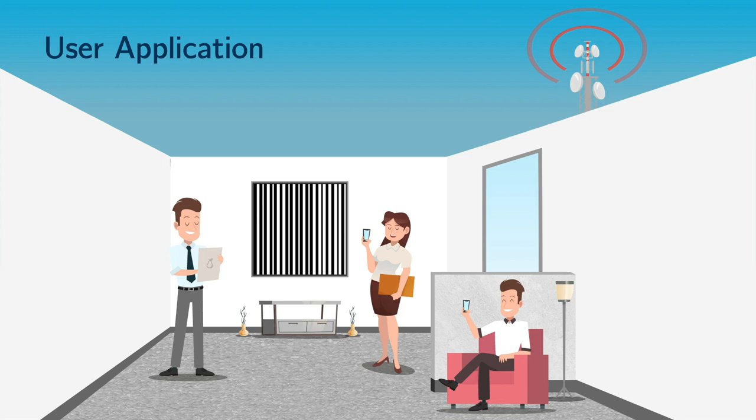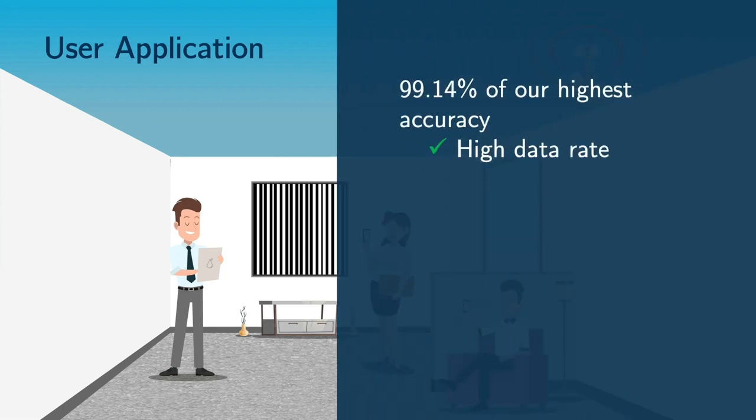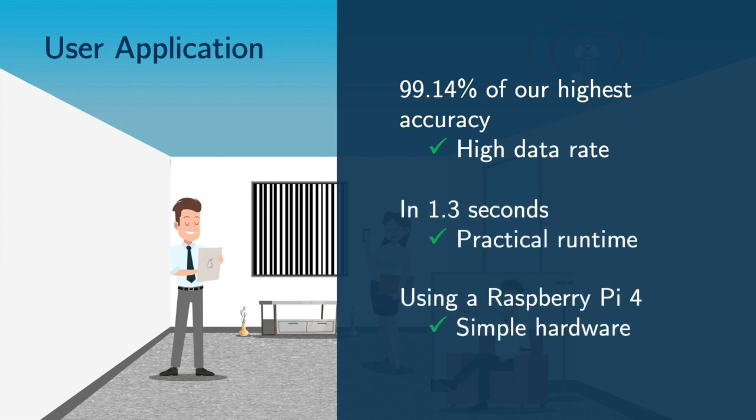Considering data rate, the first implementation achieves 99% of the maximum data rate we achieved. Therefore, the proposed solution achieves a high data rate in a small time even when using a general-purpose resource-limited processor. So, how did we achieve this result?